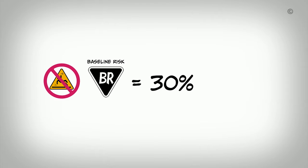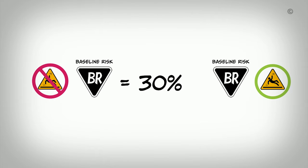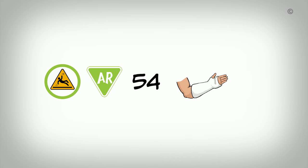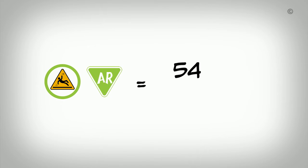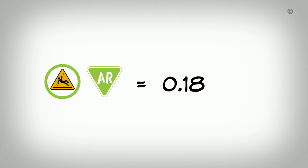Given the intervention and control groups are randomly allocated, we know that baseline risk for a fracture in the intervention group is also around 30%. However, after exposure to the intervention, 54 seniors report fractures. We calculate absolute risk for a fracture in the intervention group by dividing 54 by 300, which equals 0.18. So those in the intervention group have an absolute risk for a fracture of 18% following the intervention.